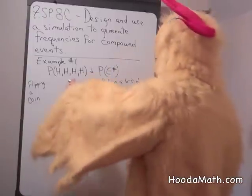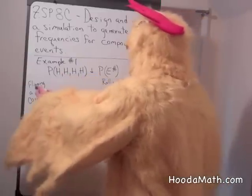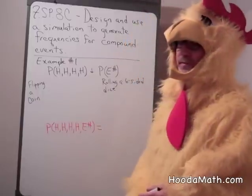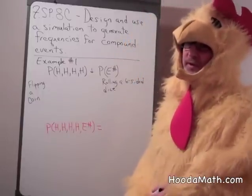So this in itself really is a compound event. We're flipping a coin four times, and what's the probability of getting heads four times in a row?